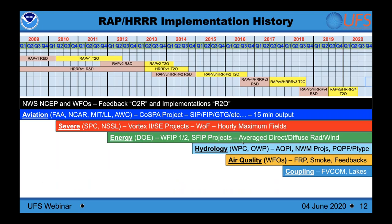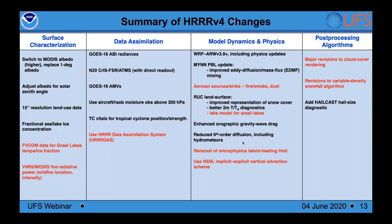Multiple versions of the RAP and HRRR have been transitioned into operations on roughly a two-year cadence going back to 2014 for the HRRR and 2012 for the RAP. At the same time, additional stakeholders have been onboarded, including more recent capabilities such as air quality aspects, wildfire smoke prediction, and coupling of Great Lakes temperatures with the FVCOM system in HRRR version 4.